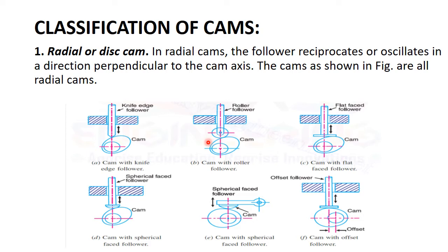The first type is the radial cam. In radial cams, the follower reciprocates or oscillates in the direction perpendicular to the axis of the cam. The axis of the cam and the follower reciprocate up and down. Both different types of cams are shown here.